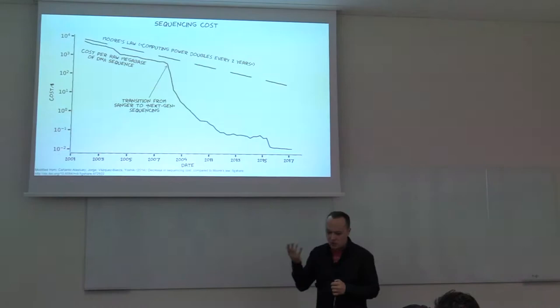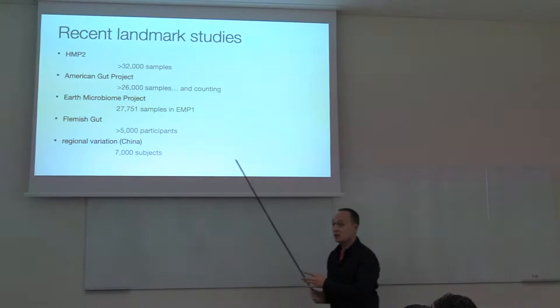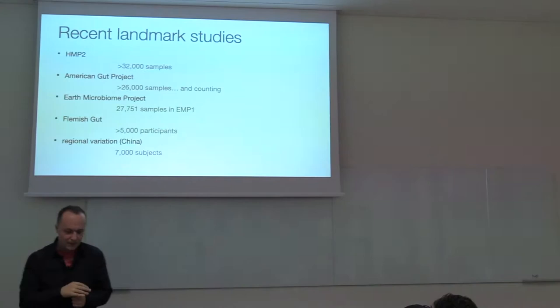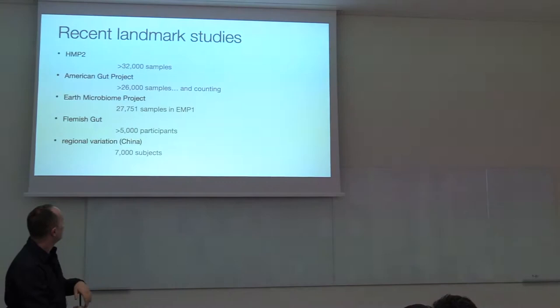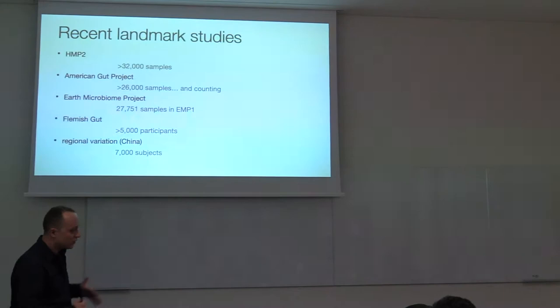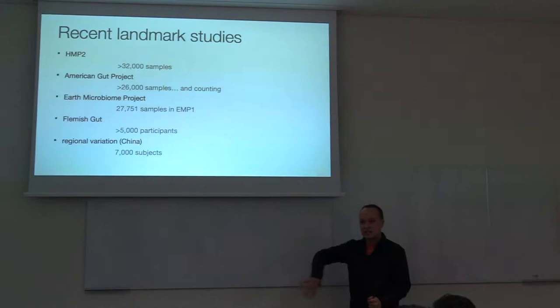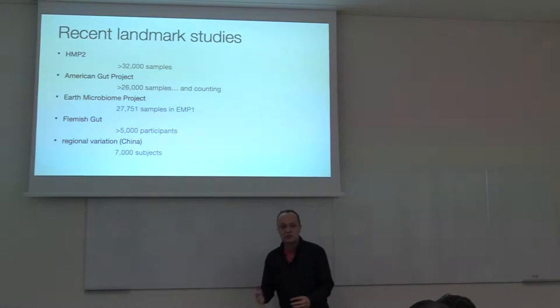As of 2019, we have studies of much greater scale. The Human Microbiome Project part two collected over 30,000 samples. The American Gut Project, carried out by my parent lab at the University of California, San Diego, has over 26,000 samples. The Earth Microbiome Project has over 25,000 samples. Plus different regional studies from different countries trying to sequence local microbiomes. Now we've got hundreds of thousands of microbiome samples collected, with the primary goal of capturing diversity — since we know the microbiome is very dynamic and hard to characterize.